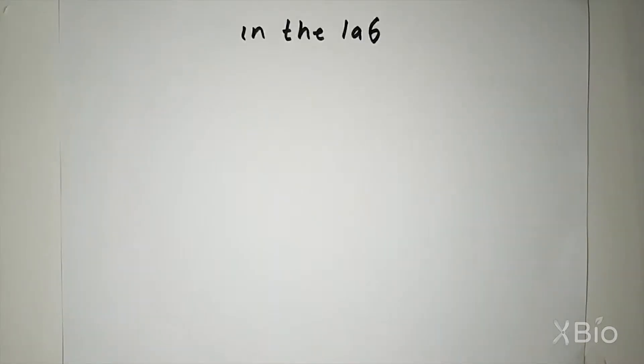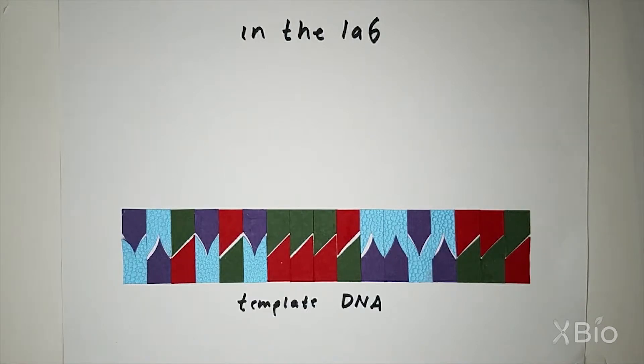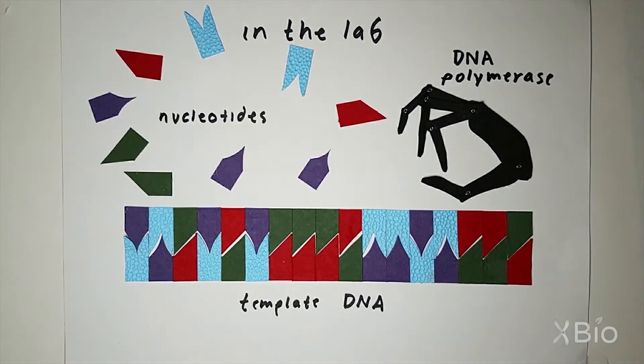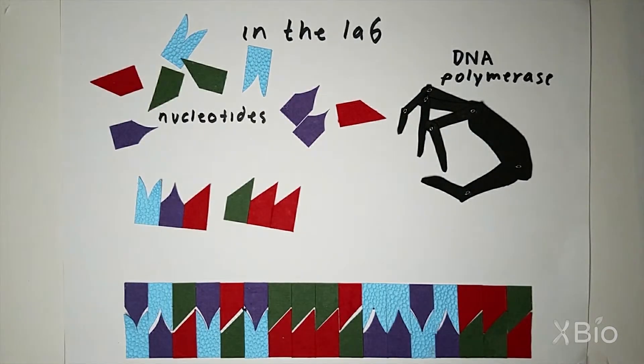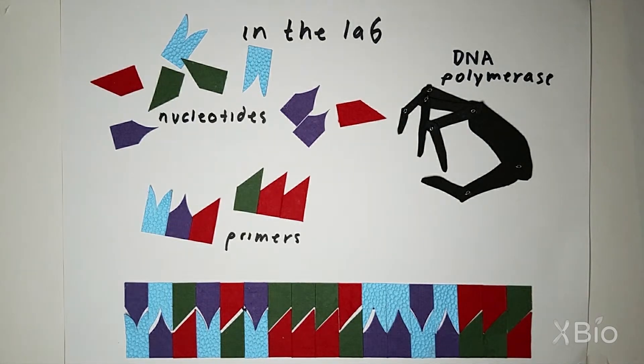When we want more DNA in the lab, instead of a cell, we have a tube. Like a cell, the tube's got template DNA, DNA polymerase, and assorted nucleotides, plus one more special ingredient called a primer, which tells the DNA polymerase where to start.